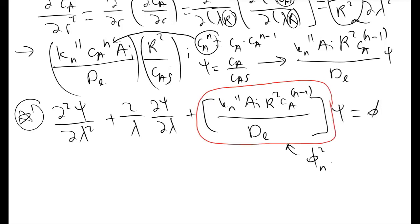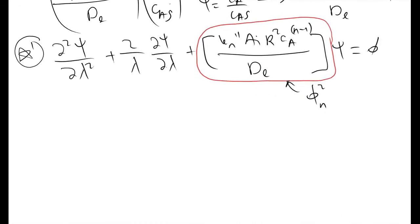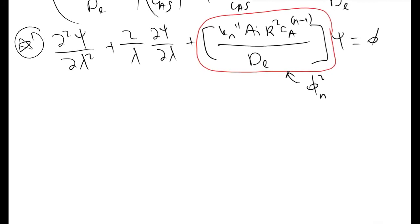In a textbook, the Thiele modulus φ_N is typically given as the square root of this relationship with R pulled out. But the gist is still the same. At this point, a good question to ask is: why do we care so much about the Thiele modulus, and how can we actually use it?